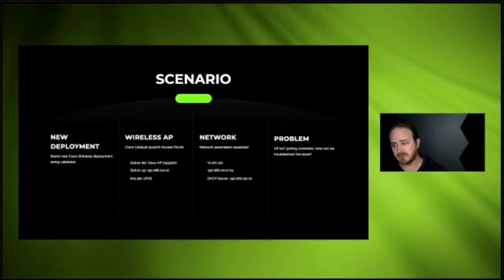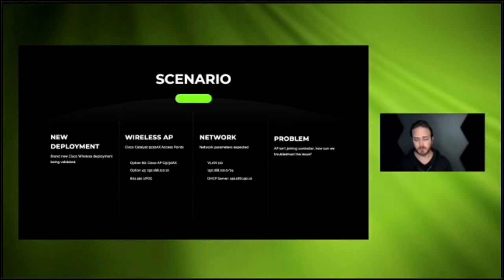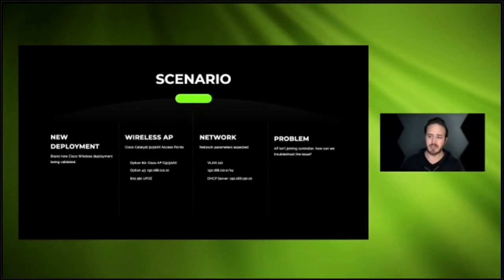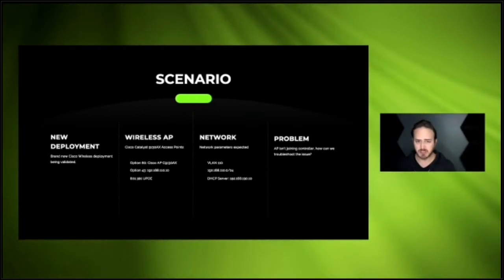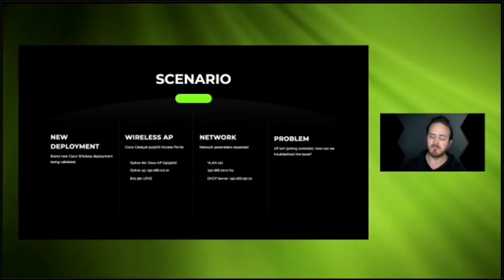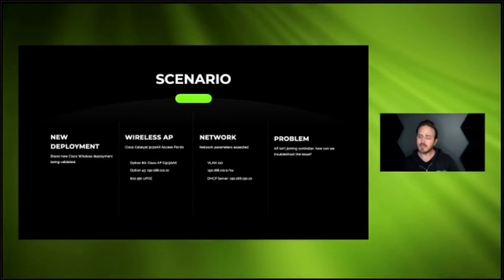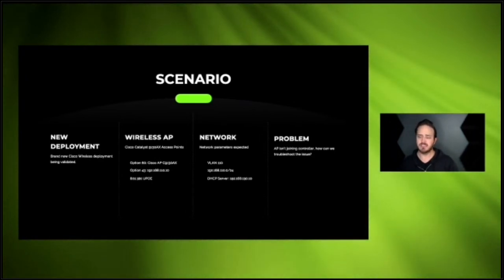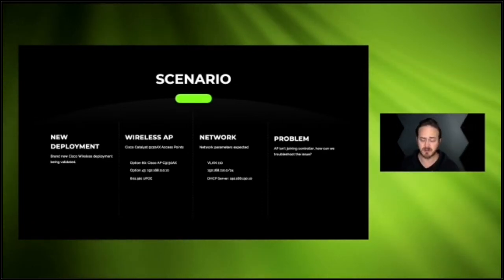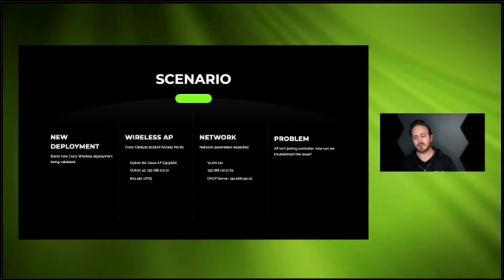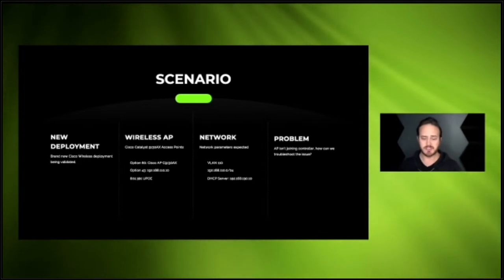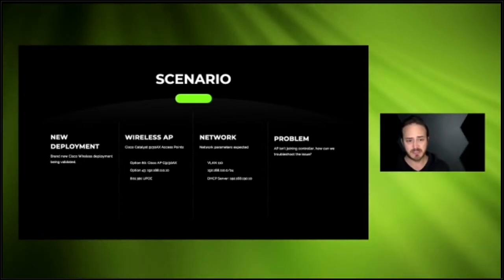Our current problem is that the AP isn't joining the controller — it's just doing the LED dance because it can't find the controller. Something's going on, we don't know exactly what. So we're going to switch over to the handhelds and walk through the tests you can do with the LinkRunner G2 — this applies to any of the wired testers from NetAlly — to troubleshoot and validate this network.